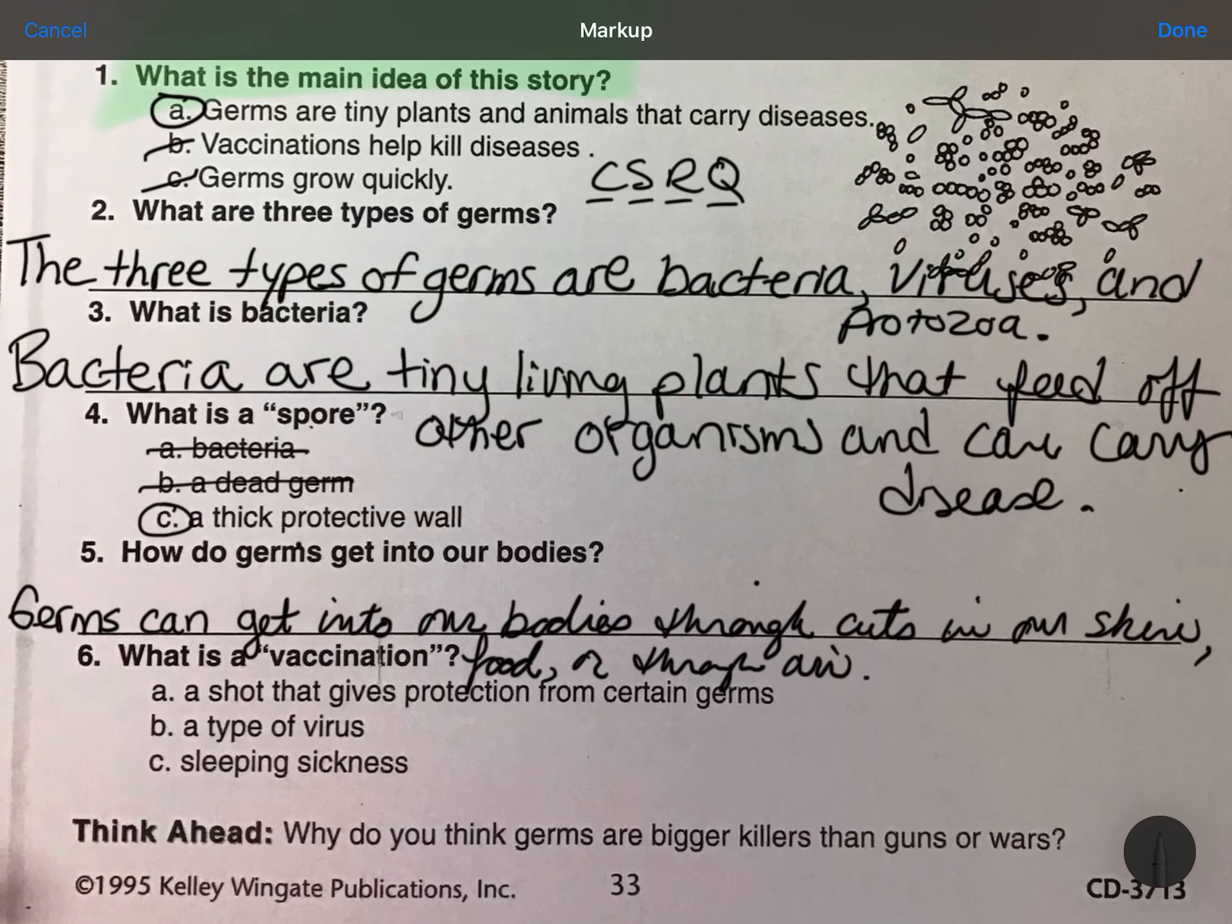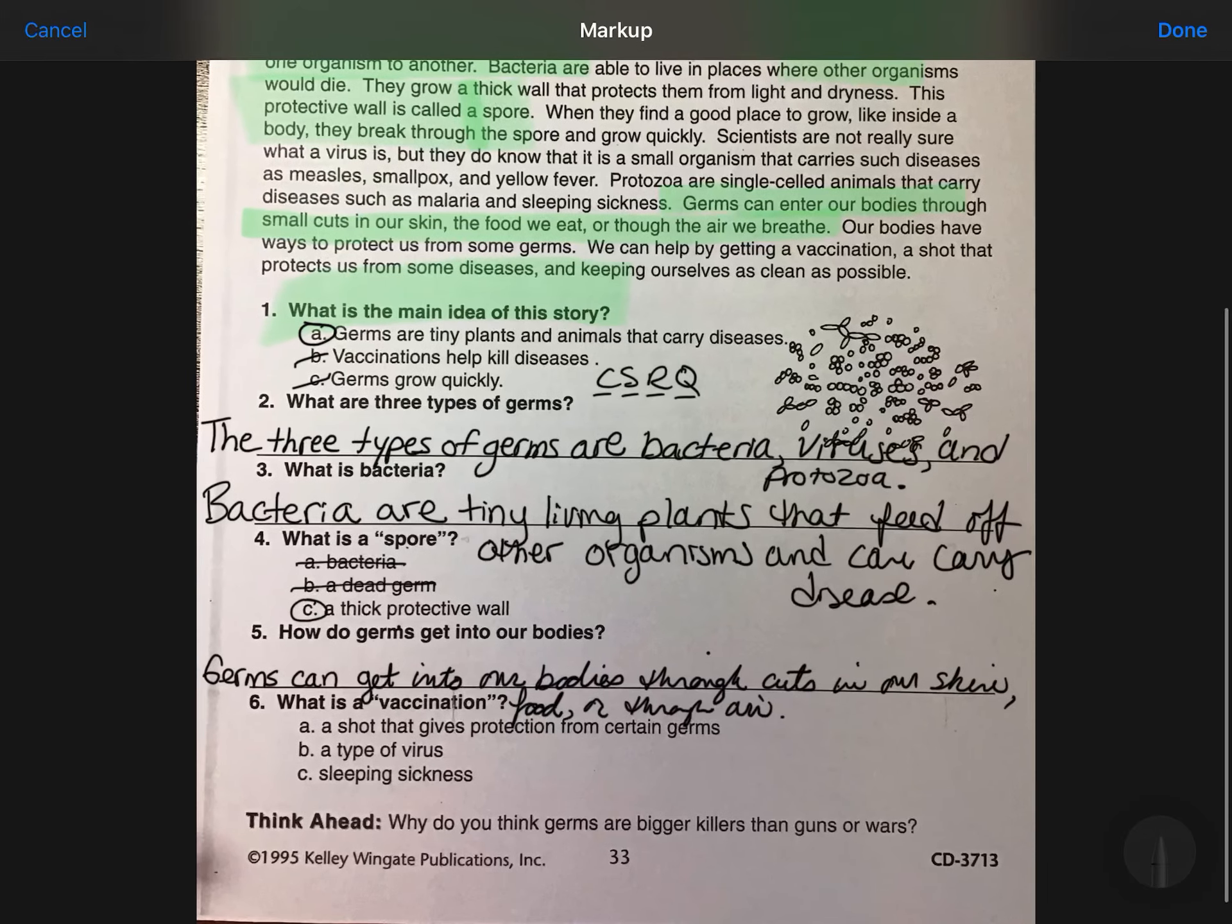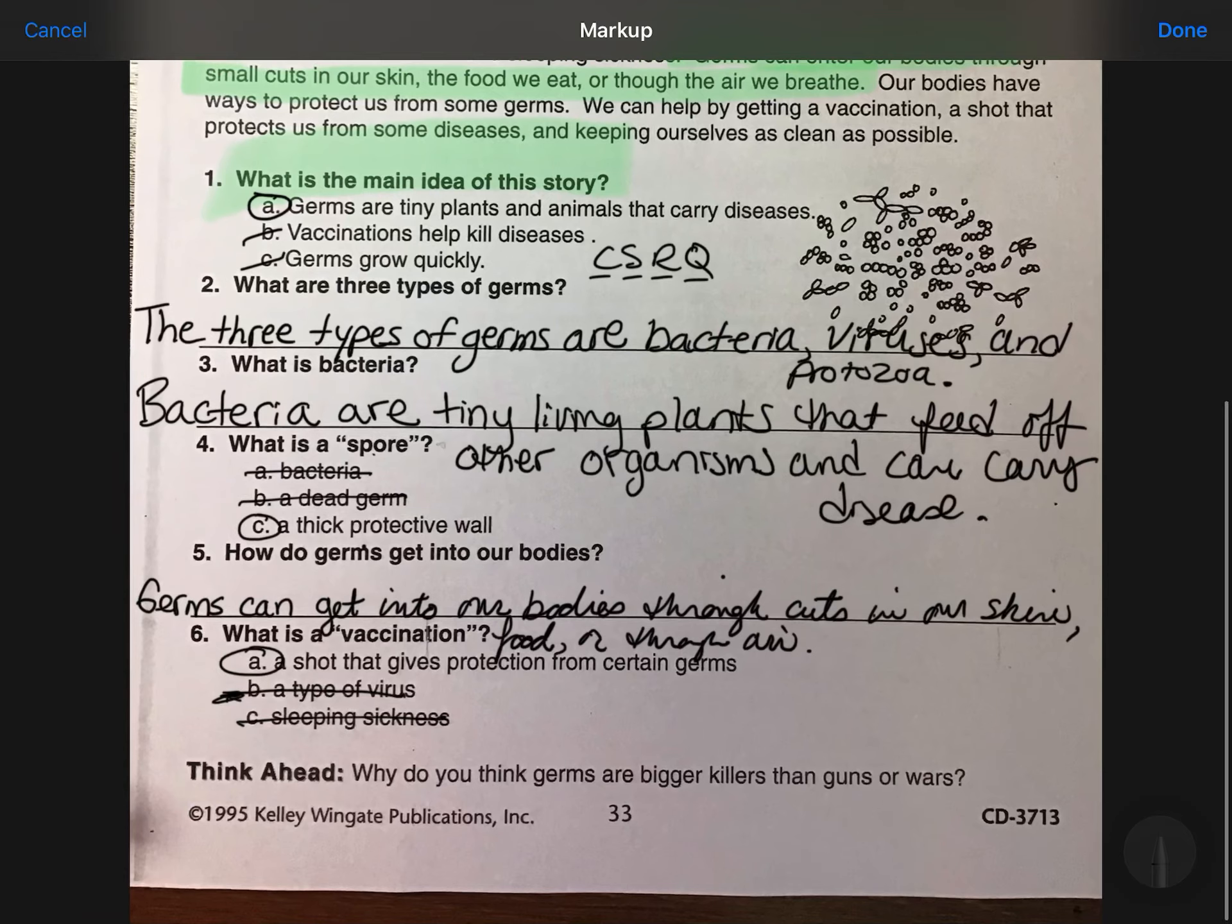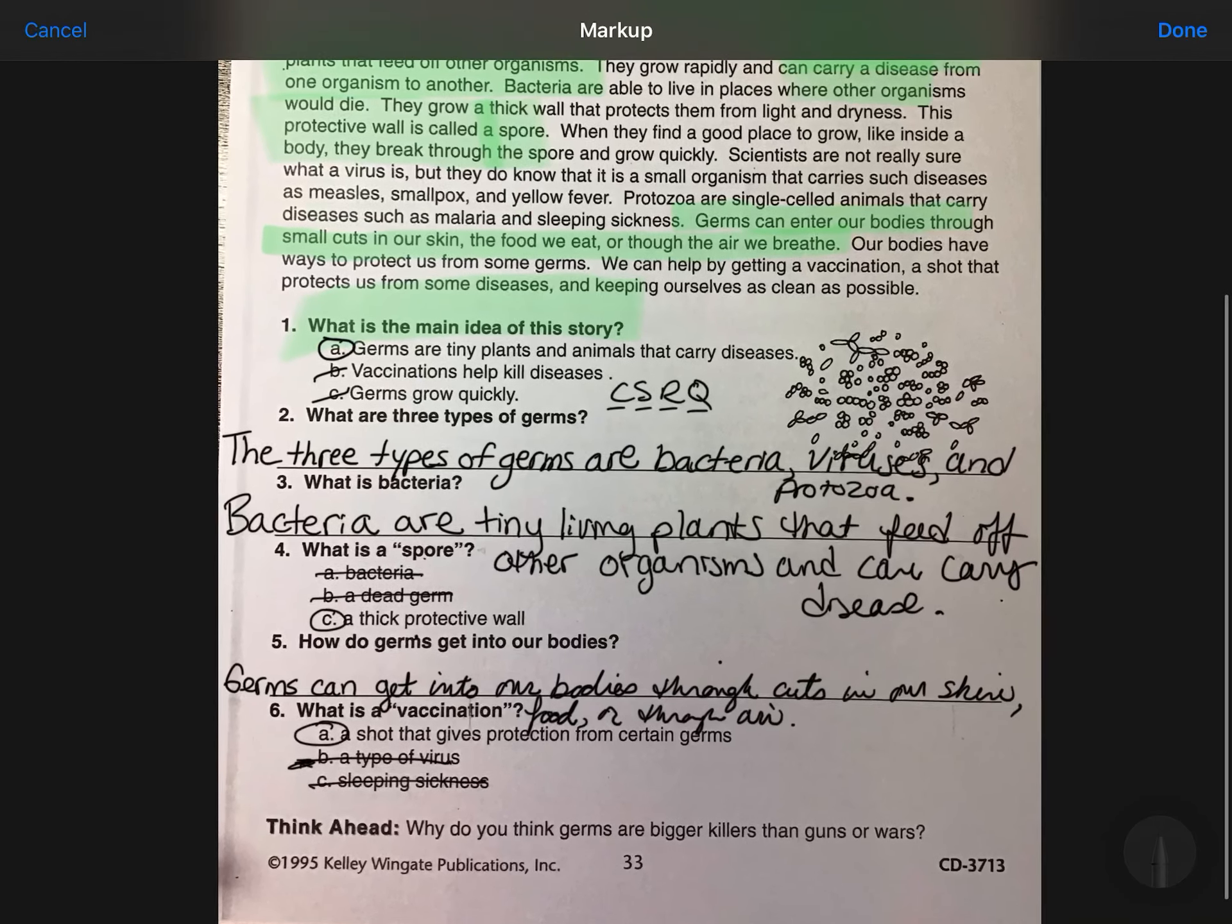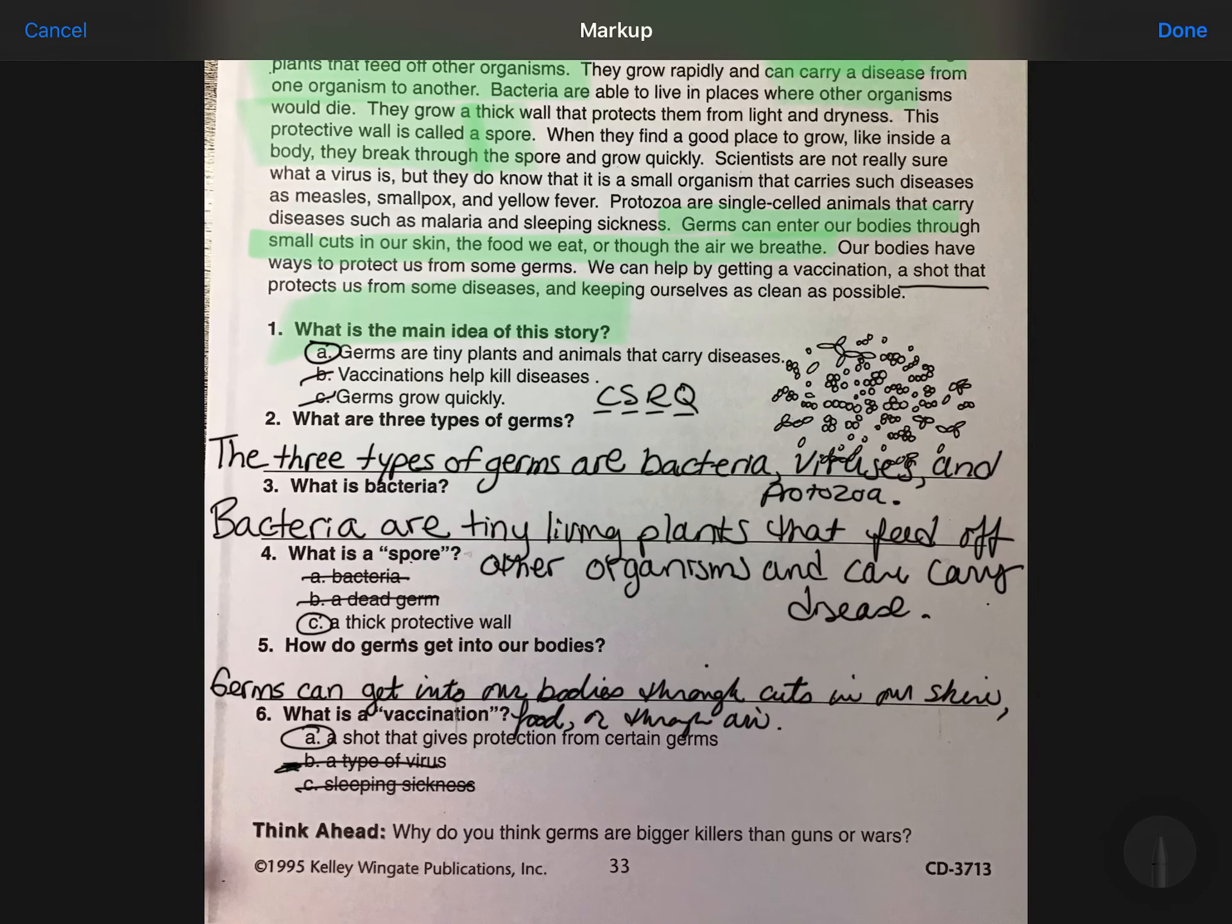Six, what is a vaccination? You can go back to the story, but I think most of us know that it's not a type of virus, a sleeping sickness. It's a shot that gives protection from certain germs. I know that one could be kind of confusing because we hear that it's part live virus. But anyway, that's more in detail with vaccinations. But from the text, I guess we better go back to the text, is a shot that protects us from some diseases.